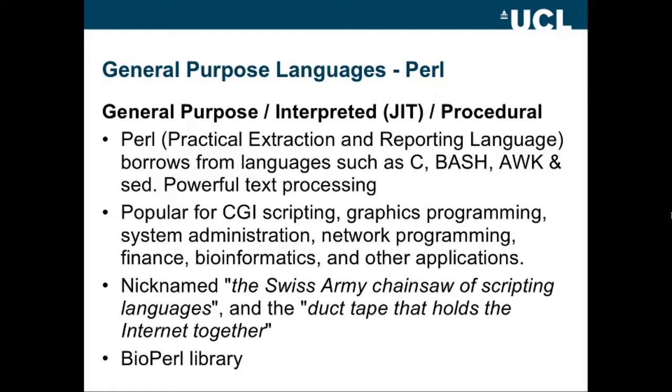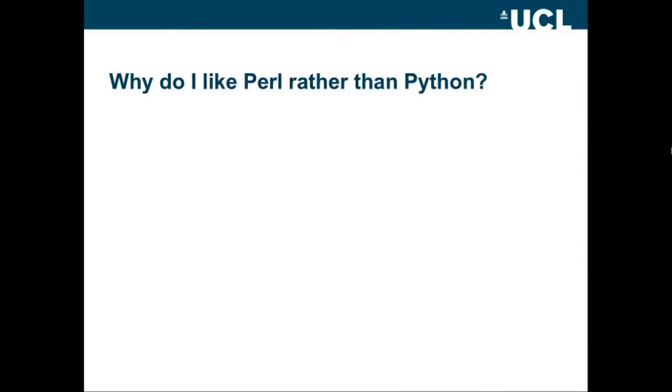Now, I said I was going to show you Perl as an example, because I think most of you will have had some experience with Python. So it's good to introduce another popular language. As I said earlier, Perl is a general-purpose, interpreted, just-in-time, compiled procedural language. Perl stands for Practical Extraction and Reporting Language, and it borrows from a number of other languages. Why, then, do I like Perl rather than Python?